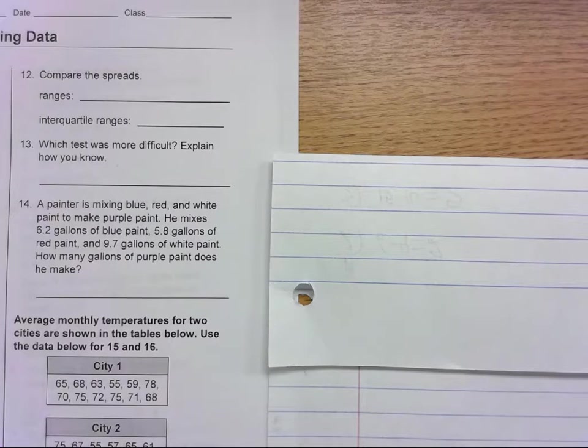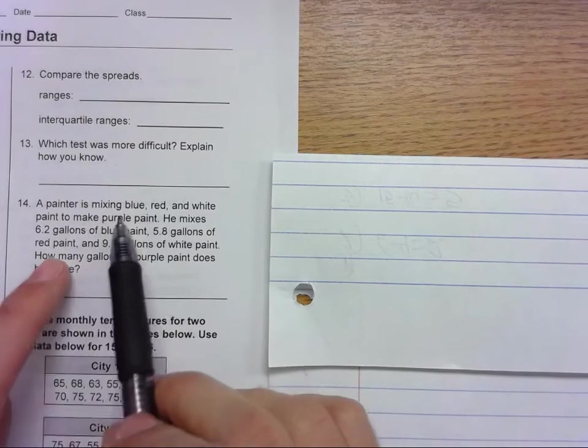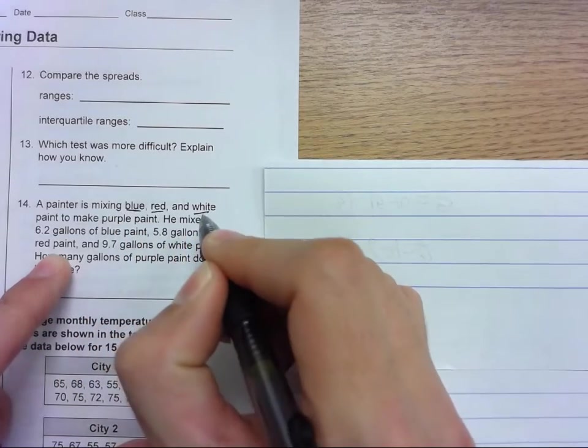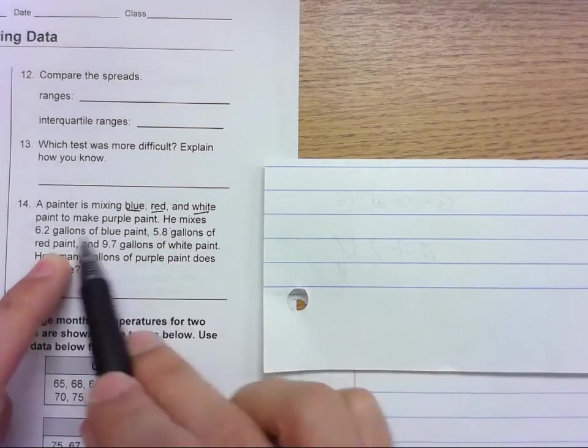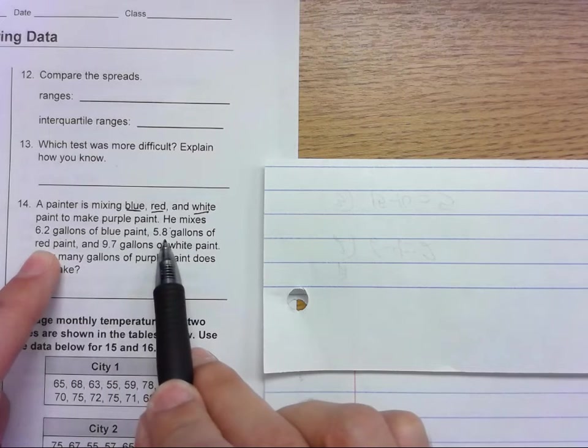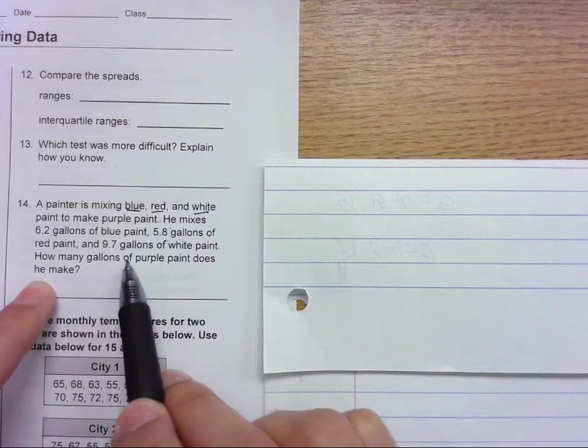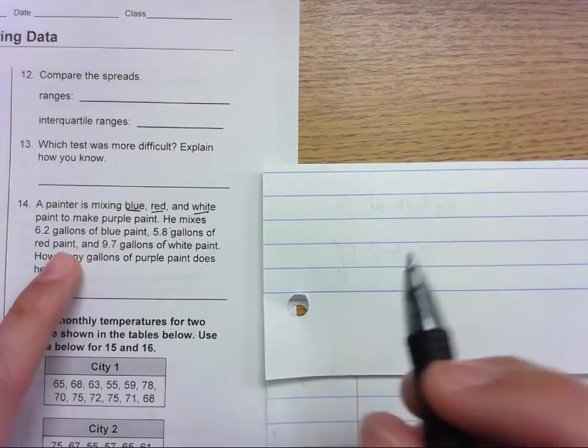All right, let's look at number 14, module 6 study guide. A painter is mixing blue, red, and white paint to make purple. He mixes 6.2 gallons of blue, 5.8 gallons of red, and 9.7 gallons of white. How many gallons of purple paint does he make? So this is not terribly difficult.